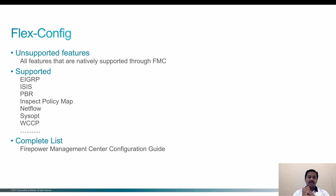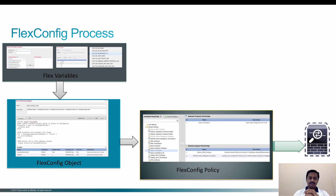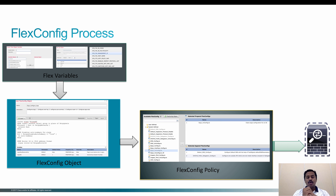The process of using FlexConfig is: first you need to have various variables. The variables could be text objects, network objects, or system variables that are predefined on the FMC. These variables you can refer to and use in the FlexConfig object, where you define multiple CLIs to configure. For example, if you want to configure EIGRP, you need multiple CLIs pushed to the Firepower Threat Defense, in which variables such as network or interface can be called from the flex variables.